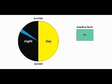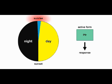Phytochrome is a blue-green plant pigment that absorbs red and far-red wavelengths of light with different results. At night, phytochrome is in its inactive form. At sunrise, when red wavelengths dominate the sky, phytochrome converts to its active molecular form.